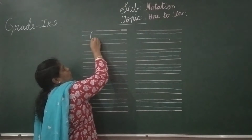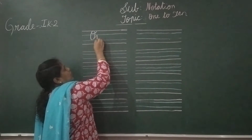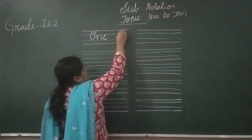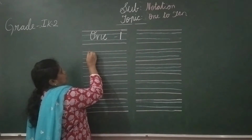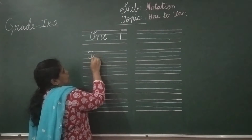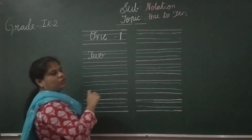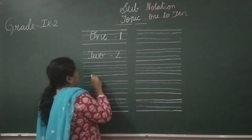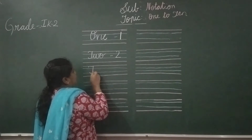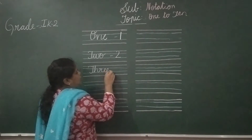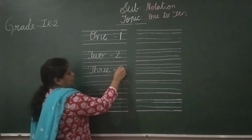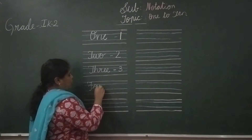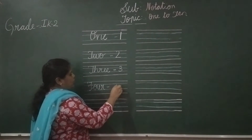T, O, N, E — 1. This is 1. Next: T, W, O — 2. This is 2. T, H, R, E, E — 3. F, O, U, R — 4.